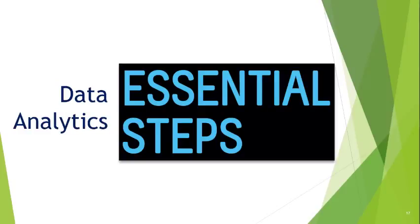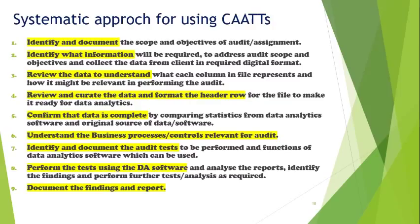Let's understand the essential steps for data analytics. For any audit assignment, we first need to identify and document the scope and objective — this remains true even when using CATS. We need to identify what information will be required. In a manual environment we look at records, files, and registers; in a digital environment we need to identify the digital format in which the data is available. We need to review the data to understand what each column represents and how it might be relevant to the audit. We also need to review and curate the data, structure it by formatting so it is ready for analysis, and ensure its correctness and completeness by comparing statistics from the data analytics software against the original source of data.